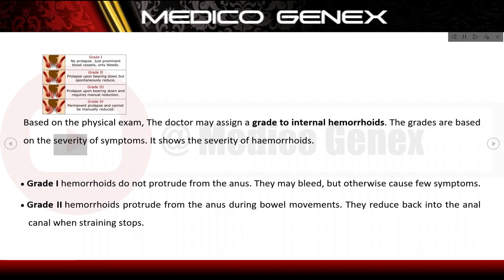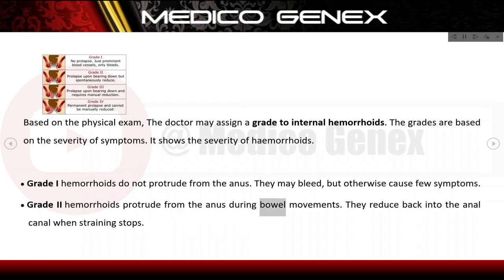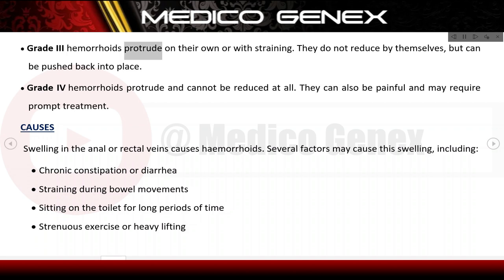Haemorrhoids are graded based on the severity of symptoms. Grade 1: haemorrhoids do not protrude from the anus; they may bleed but otherwise cause few symptoms. Grade 2: haemorrhoids protrude during bowel movements but reduce back into the anal canal when straining stops. Grade 3: haemorrhoids protrude on their own or with straining and do not reduce by themselves but can be pushed back into place. Grade 4: haemorrhoids protrude and cannot be reduced at all; they can also be painful and may require prompt treatment.